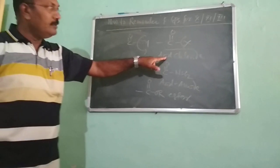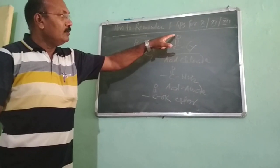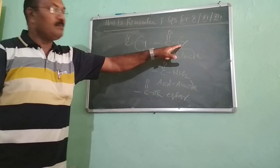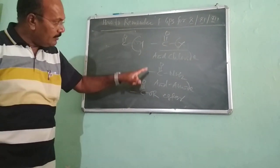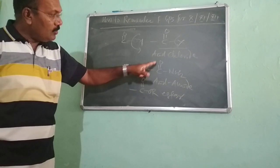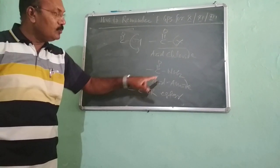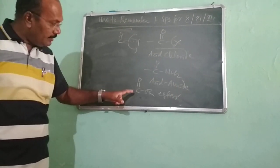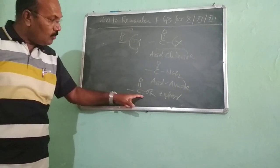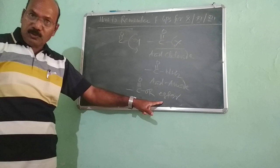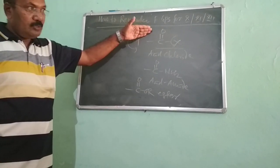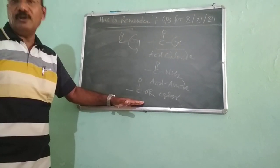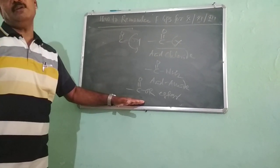The first derivative is acid chloride: C=O with X, where X may be Cl, Br, or I. The second is C=O with NH2 — that is the acid amide group. The third is C=O–OR — that is the ester group. So 6 plus 3 gives us 9 functional groups covered so far.